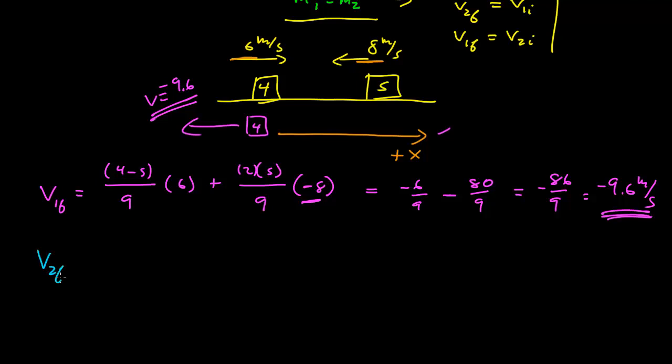Now, v2 final is equal to twice the mass of 1, which is 4, over the sums of the masses, which is 9, times the initial velocity of 1, which is 6, plus the difference in masses, this is m2 - m1, which is 1, 5 minus 4, divided by the total mass, which is 9, times the velocity of mass 2, which is negative 8.